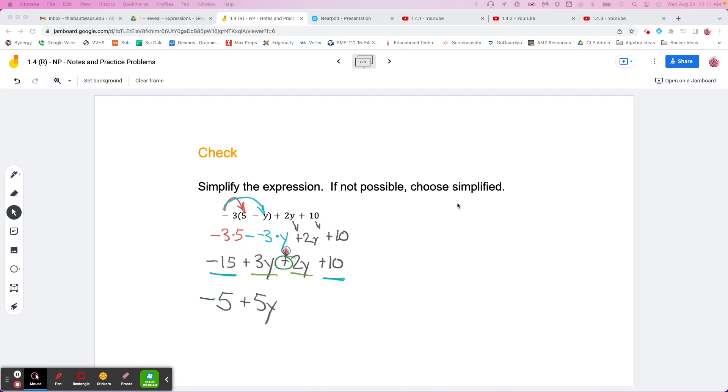So those two make 5y. This one plus this one make negative 5. These are not alike, so you just stop. That's it, it's simplified. This doesn't have a y and this has a y.